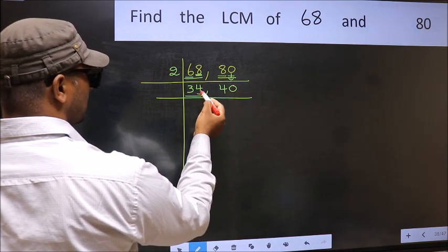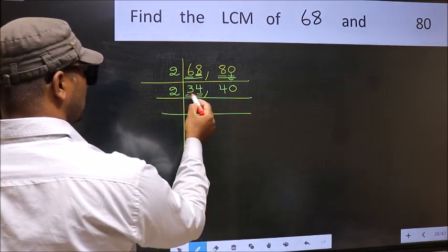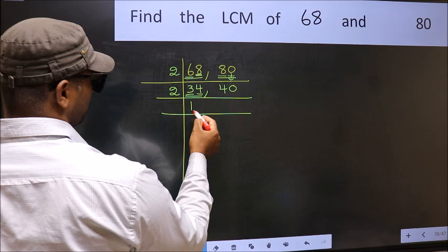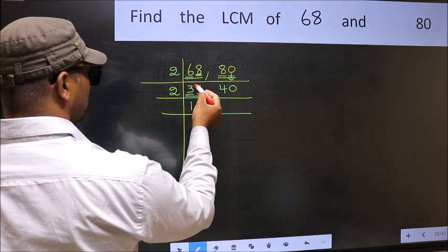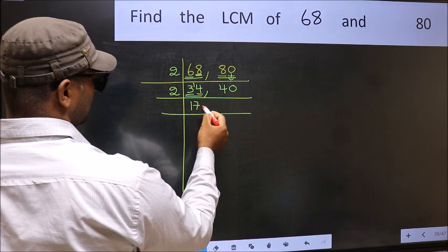Now 34, last digit 4, even, so take 2. First number 3, a number close to 3 in 2 table is 2, 1, 2. 3, 2, 1, 1, carried forward 14. When do we get 14 in 2 table? 2, 7 is 14.